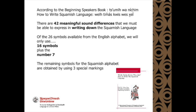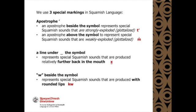The remaining symbols for the Squamish alphabet are obtained by using three special markings. We use the apostrophe. An apostrophe beside the symbol represents special Squamish sounds that are strongly exploded.